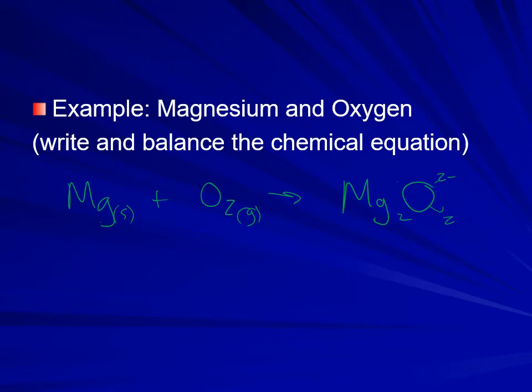We're putting those together and we have these charges we can cross over, then we have our two and our two, and because that's a shortcut we can reduce them and end up with magnesium oxide, which we know is an ionic compound because it's a metal and a non-metal. It's going to be a solid at room temperature.